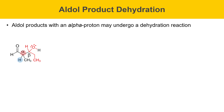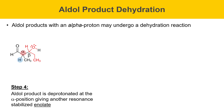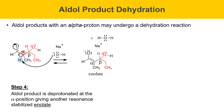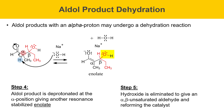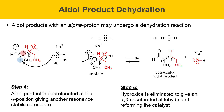The aldol product is deprotonated at the alpha position by sodium hydroxide, giving another resonance-stabilized enolate anion and water. This enolate anion has a hydroxy group that can function as a leaving group. Hydroxide is eliminated to give an alpha-beta unsaturated aldehyde, reforming the catalyst. The electrons on the negatively charged oxygen swing down, pushing the electron pair over between the alpha and beta positions and eliminating OH minus. That gives the dehydrated aldol product, water, and regenerates sodium hydroxide.